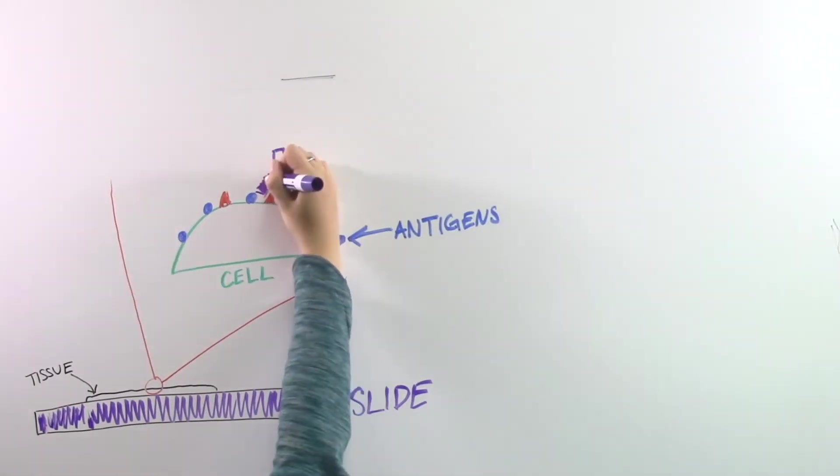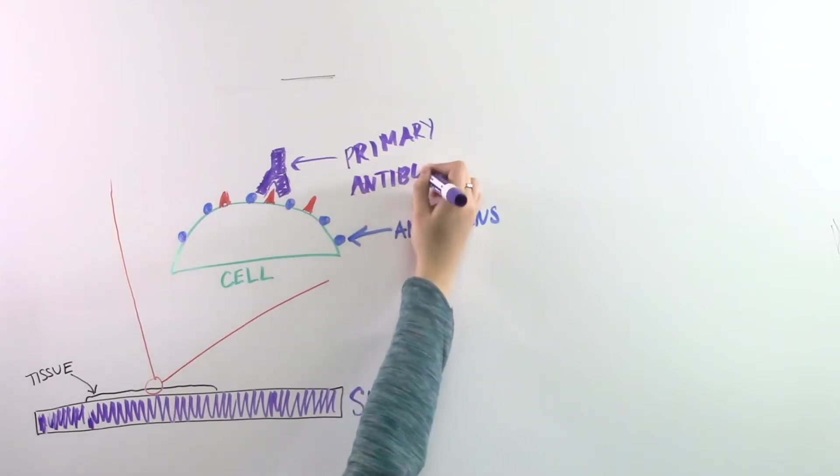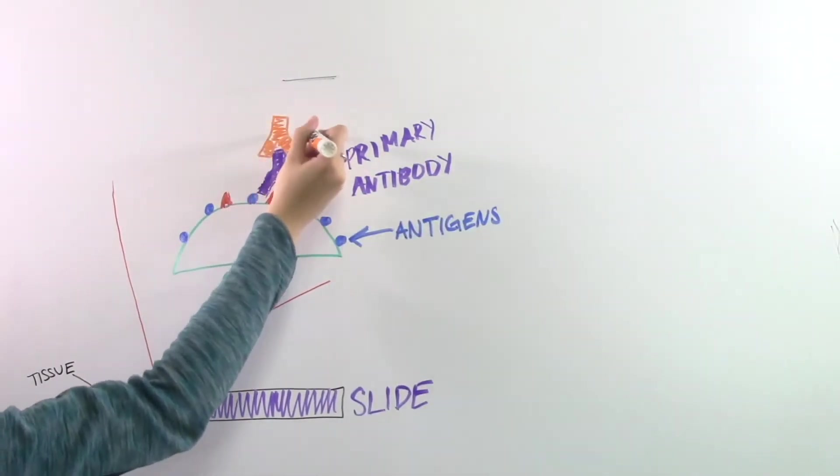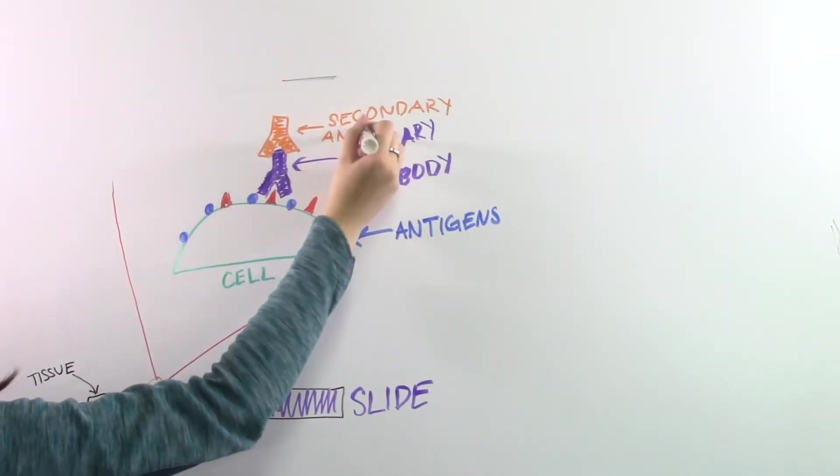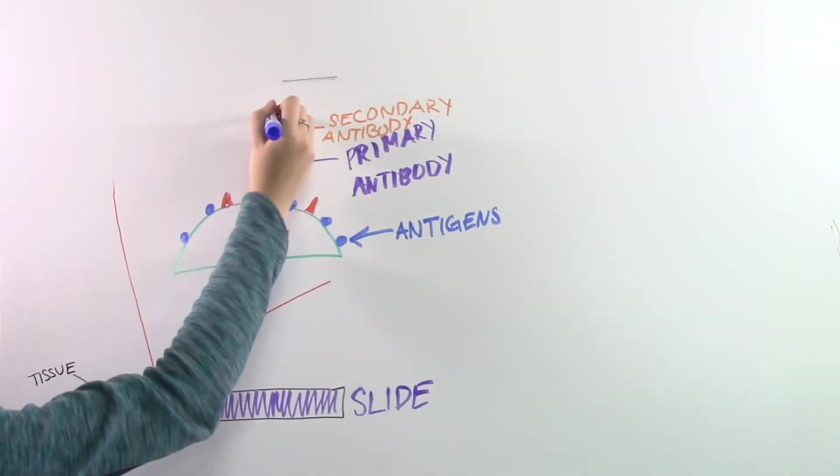The antibodies that attach first are called primary antibodies. Once the primary antibodies are bound to the cell, secondary antibodies are introduced and those bind to the primary antibody.